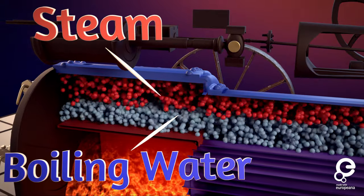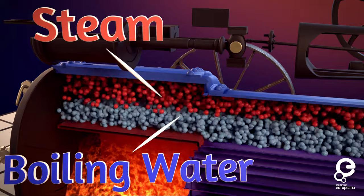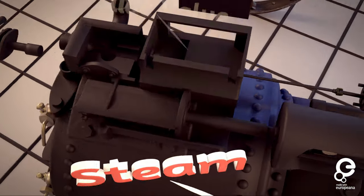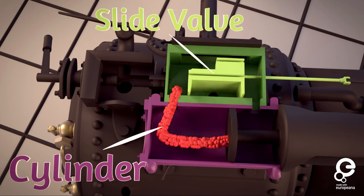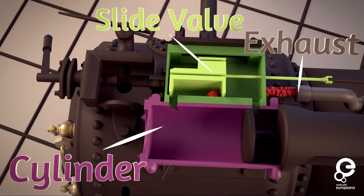The steam builds up and is trapped, and the only way for the steam to escape is by traveling through a slide valve, a cylinder, back through the slide valve, and then the exhaust.